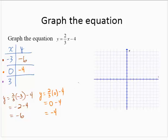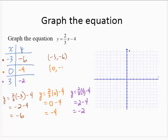Choosing 3 for x, y would equal 2/3 of 3 minus 4. That's 2 minus 4, which is negative 2. So this gives me three ordered pairs: negative 3, negative 6; 0, negative 4; and 3, negative 2.